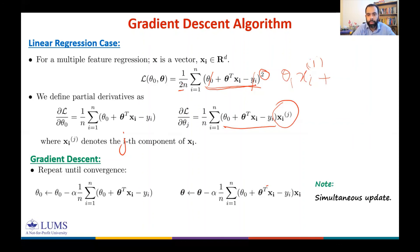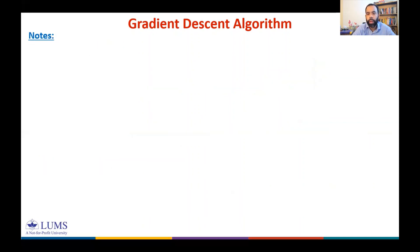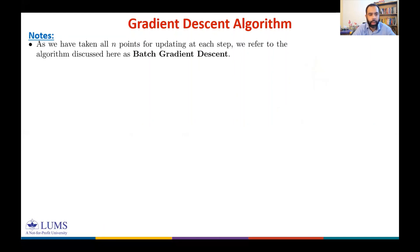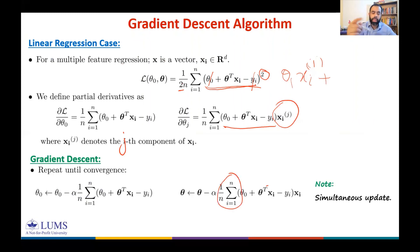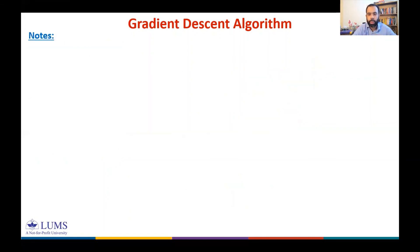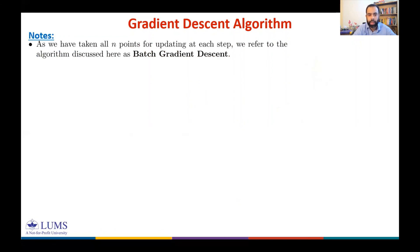We have covered gradient descent for single-feature and multiple-feature regression. You are now trained to implement gradient descent — compute partial derivatives and implement the algorithm. As we have taken all data points for updating at each step, this variant is referred to as batch gradient descent: batch means you take all samples for updating at each iteration.